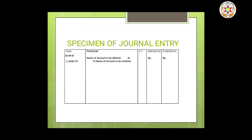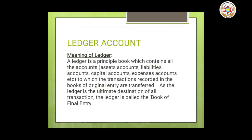This is the specimen of journal entry. You can see that the first column is for date, the second column is for particulars, the third is LF, the fourth is debit, and the fifth is credit. The date on which the transaction was entered is recorded in the date column. In the particulars column, the two aspects of transactions are recorded — that is, the details regarding accounts which have to be debited and credited.